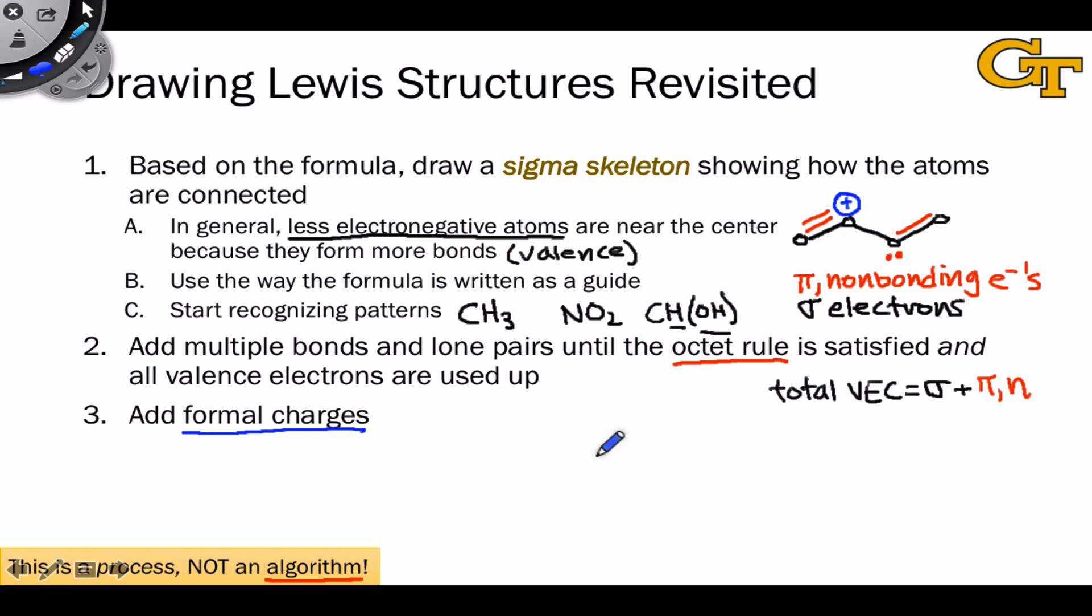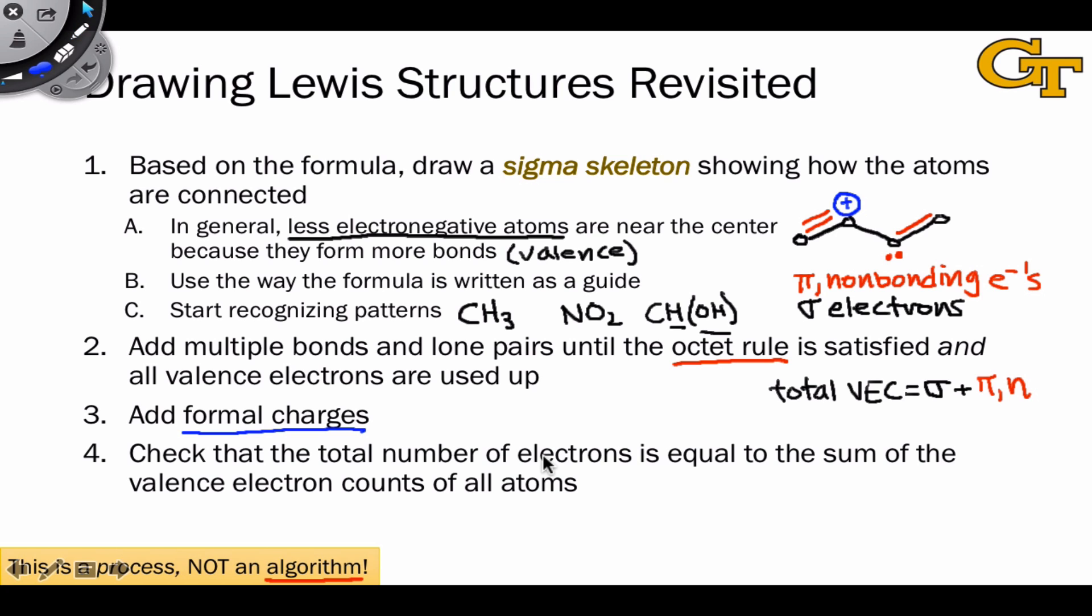And we'll talk a little bit more about how to engage this process in a later video. And then finally, we check that the total number of electrons really is equal to the sum of the valence electron counts of all the atoms.